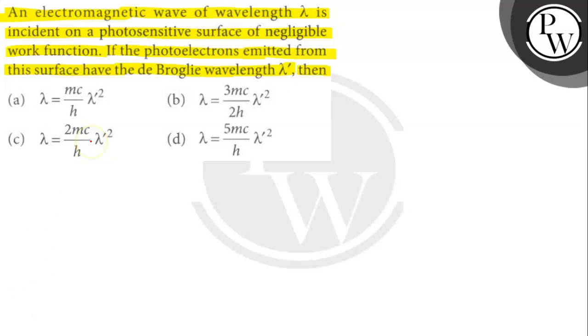Let's find out. As a first step, you could recall Einstein's photoelectric equation. As per the given condition, you could neglect the term representing the work function. Now substitute for the kinetic energy in terms of the momentum of the de Broglie wave and then rearrange to get the required expression.